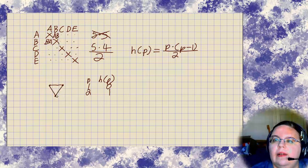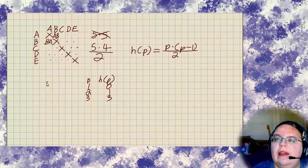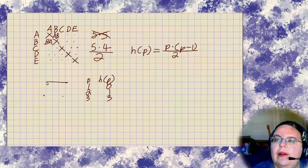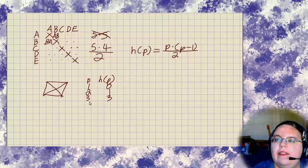Three people, one, two, three, would be three handshakes. What about four people? You'd have one, two, three, four, five, six handshakes.